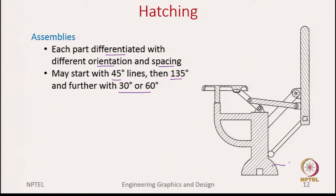For example, in the outdoor gym example, part 1 uses 45-degree hatching lines and part 2 uses 135-degree lines; similarly other parts use 30 and 60-degree lines. The idea is to differentiate each part by showing hatching in a different fashion. In this example I have only changed the orientation, but one could also change the spacing between section lines so that one can quickly see that two parts are different.